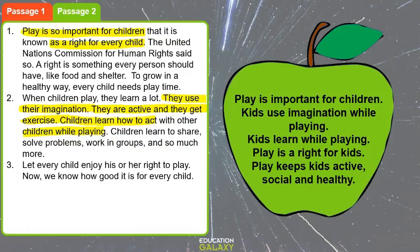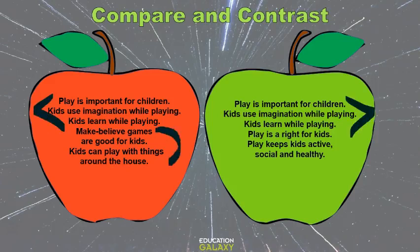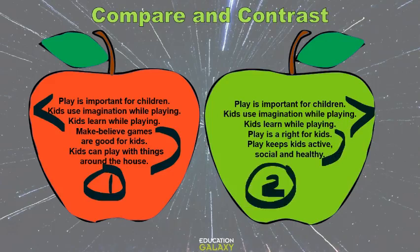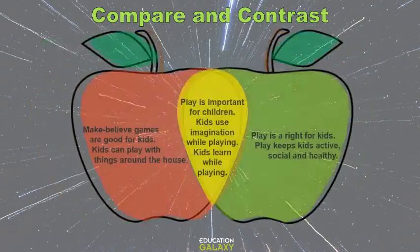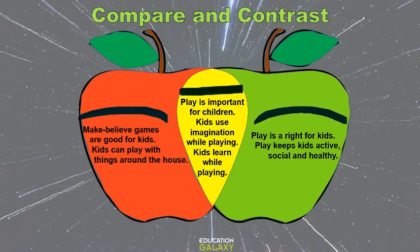So these are the two passages. Look at the key points in both passages — both passages have these common details. This is unique to passage number one, and this is unique to passage number two. Here we have our Apple Venn diagram. In the middle, we know what is the same about the two passages, and on each side is what is unique to passage number one and what is unique to passage number two.